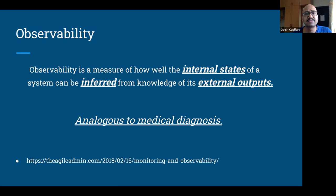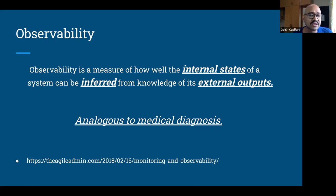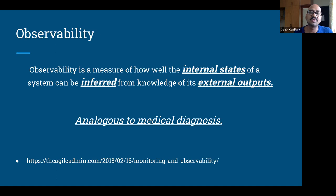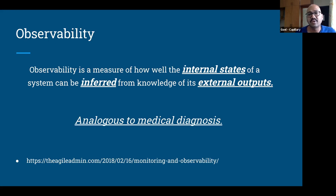The slightly theoretical definition: observability is a measure of how well the internal states of a system can be inferred from the knowledge of its external outputs. The key items here are: you're trying to measure internal states by looking at external outputs and inferring what's going on inside your application. I consider it fairly analogous to a medical diagnosis. To diagnose what's going wrong inside a human body, doctors don't start doing surgery — they try to infer what's going on by looking at external outputs: blood pressure, heartbeat rate, temperature, pulse rate, and those external signals the body sends out. Observability of software systems is just an analogue of that.